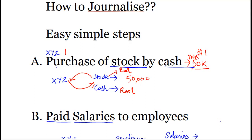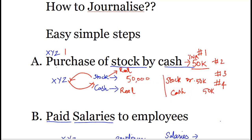Now we are in the third step. We have identified the parties of the transaction in step one, identified the nature of the accounts of these two ledgers in step two, and the third step is to apply the golden rules of accounting. For a real account, the rule is: debit what comes in and credit what goes out. Now we pass the fourth step — the journal entry. We have purchased stock, so stock comes in, so we debit stock. Cash is moving out of the company, so we credit cash. The transaction value is 50,000 rupees. That is the journal entry to be passed for this transaction.